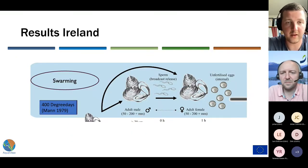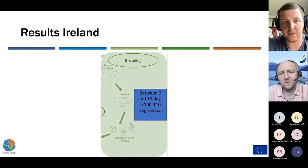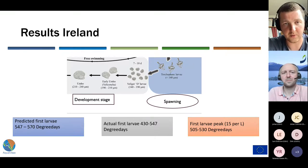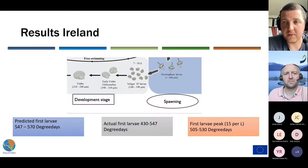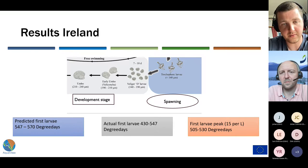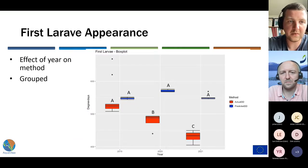These are the results from Ireland. Starting with the swarming period at 400 degree days as given by Mann, then the brooding period, which we calculated to be between 9 and 13 days — roughly translating to 100 to 110 degree days — and then spawning. According to our predictions, spawning would take place between 547 and 570 degree days for the tanks in Ireland. When we looked at the actual results, the first spawning happened between 430 and 547 degree days — off by at least more than 100 degree days to our surprise. The first larvae peak at 15 larvae per litre was actually a better predictor, with between 505 and 530 degree days on average.